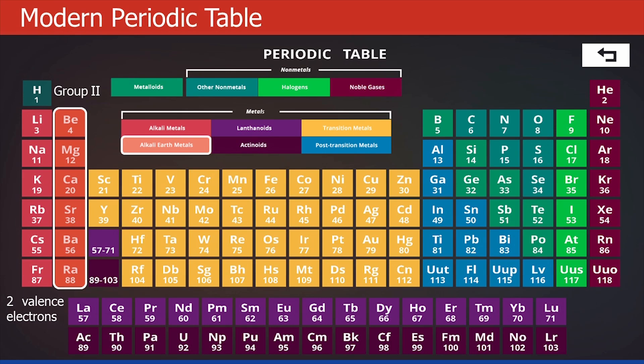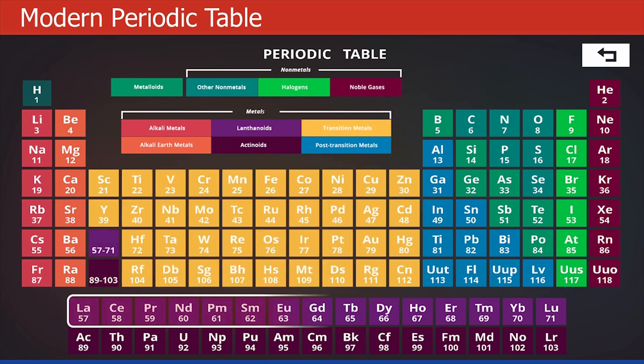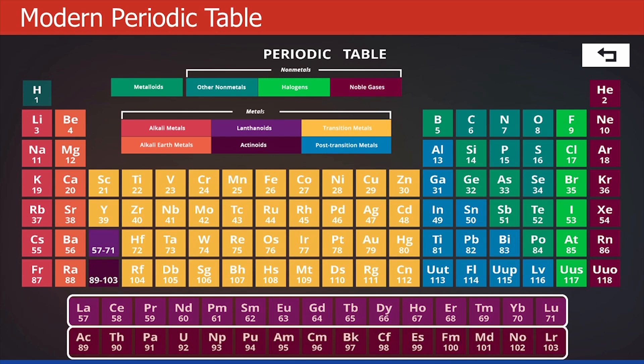Now look at all the elements in yellow. These are called transition elements. Compared to alkali and alkali earth metal, they are less reactive. Now look at the purple and dark purple elements. They are called lanthanides and actinides. These are heavy elements and are mostly radioactive in nature.